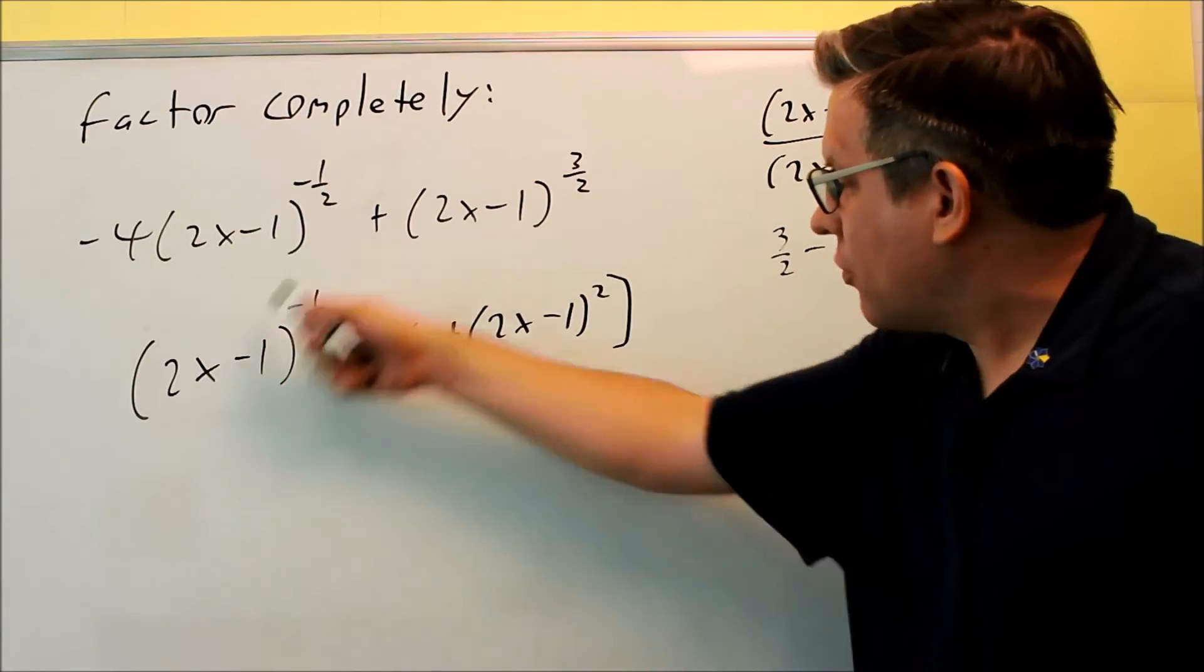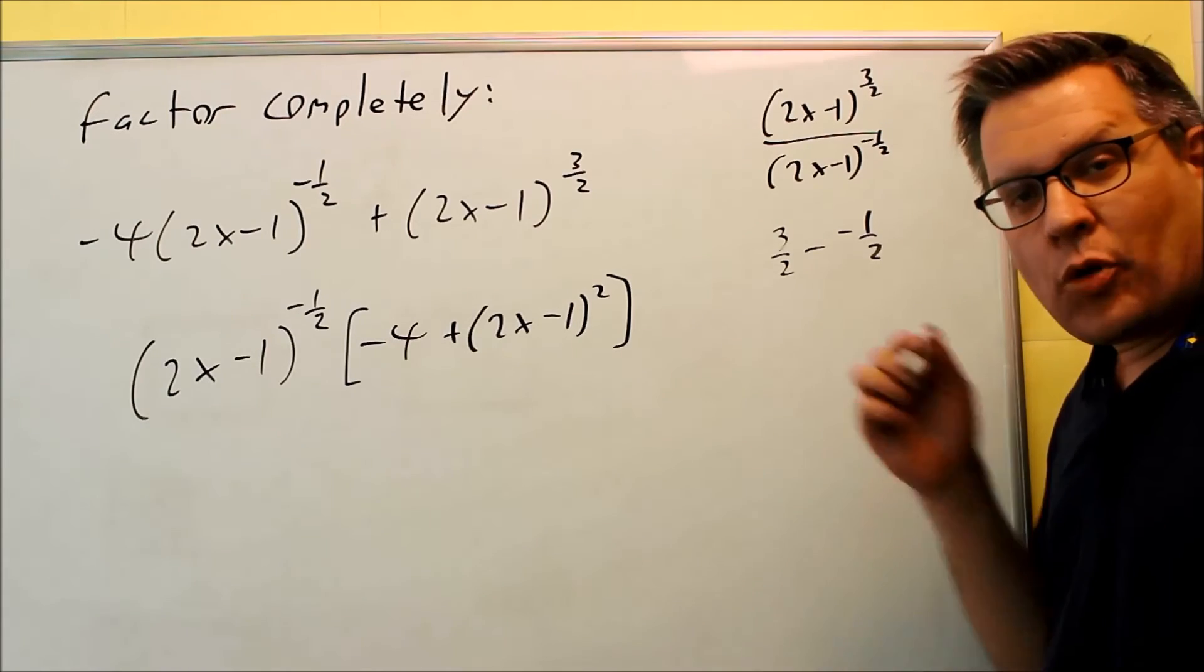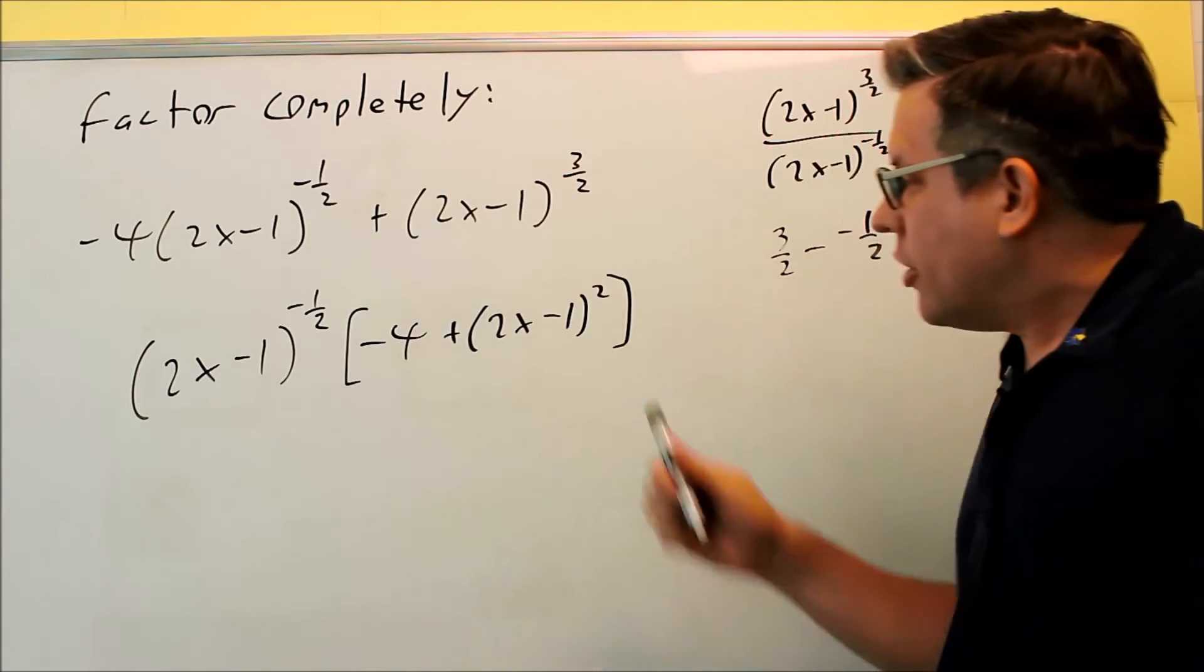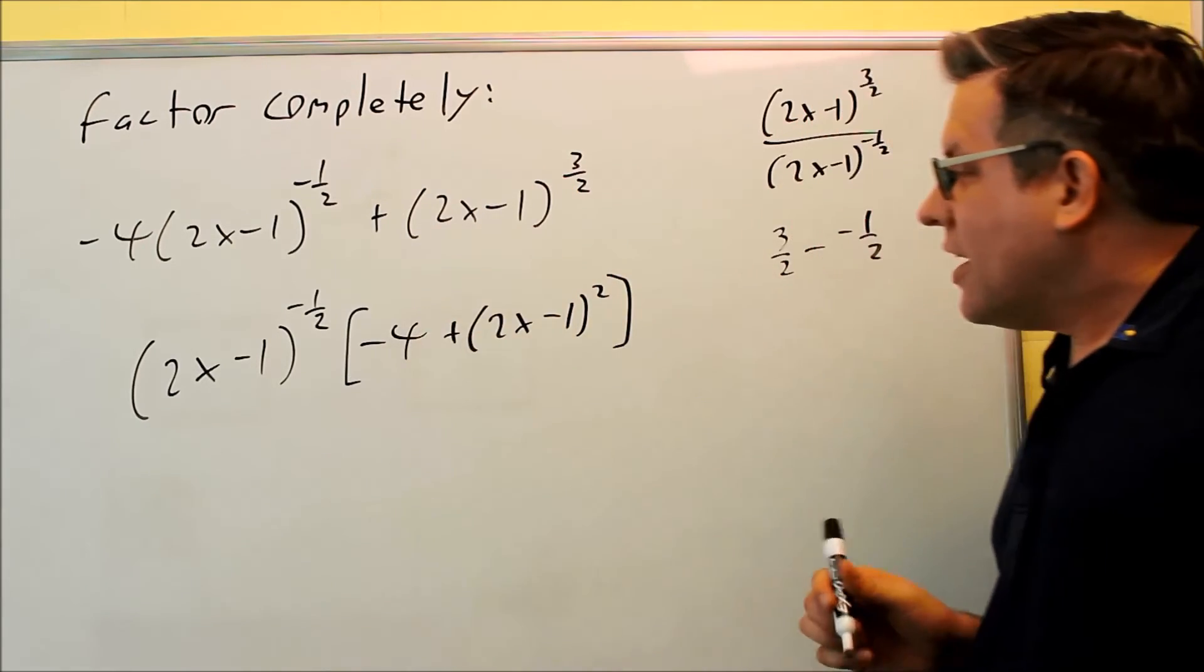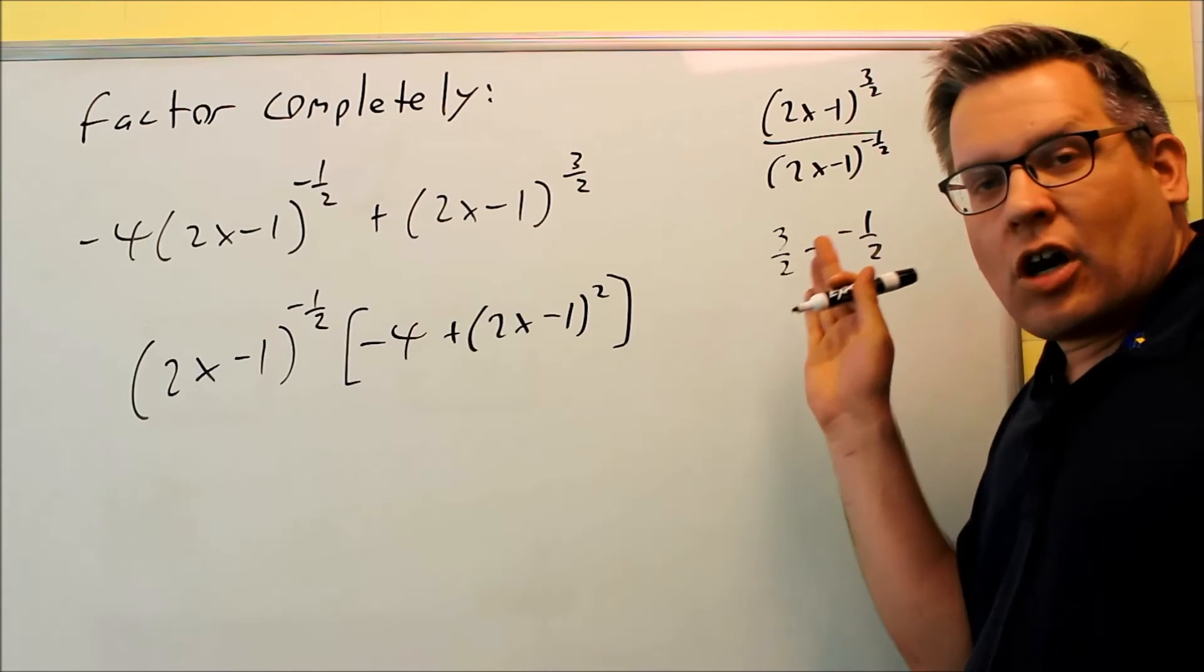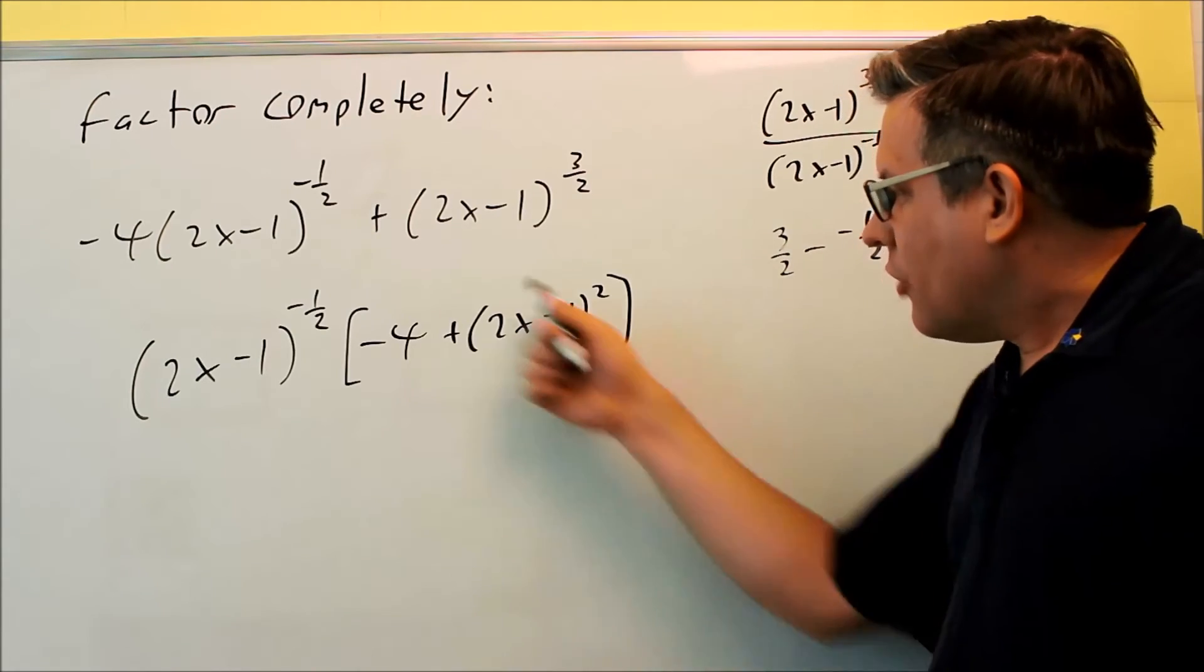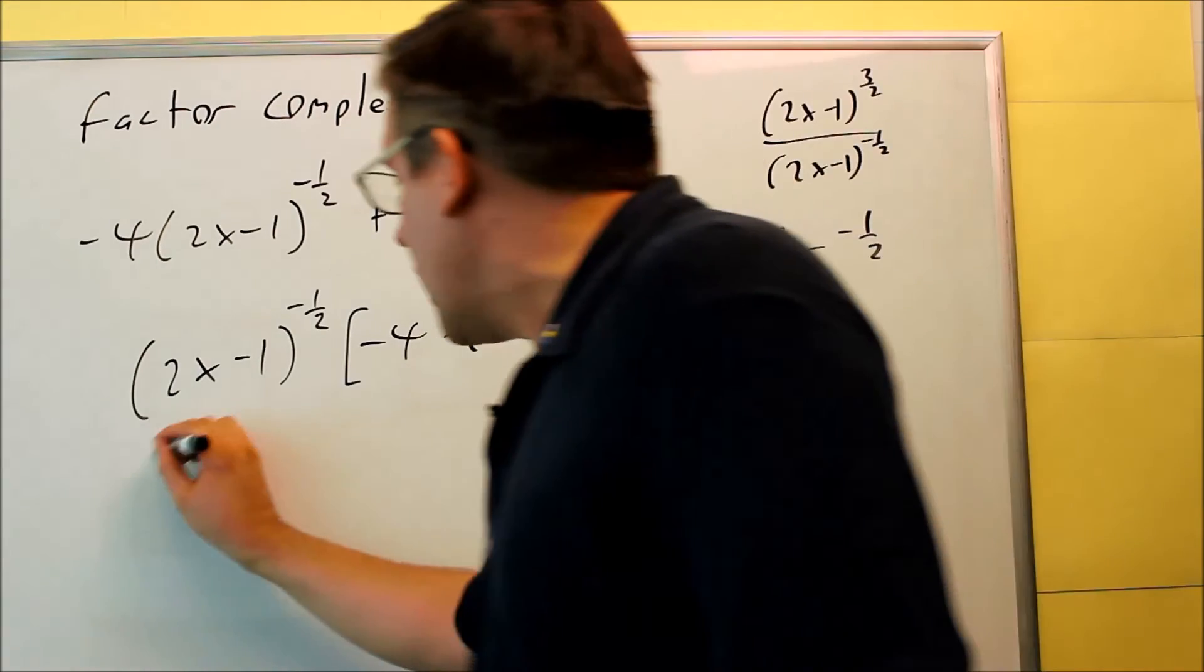Again, you can always multiply this back through, and you should get the same thing that you started with. But we're not done yet, because it says factor completely, so we want to expand this out and see if there's a way that we can factor that. Now, you could expand it all out, and this is what I did in the notes, but there's another way you can do this also. If you recognize that this is a difference of squares, that might make it easier to factor.